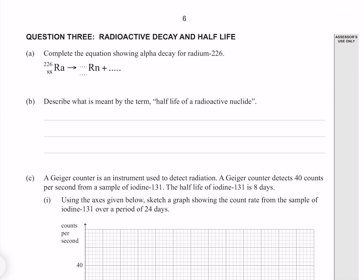Question 3. Complete the equation showing alpha decay for radium-226. Since we know our radon has undergone alpha decay, we can substitute our alpha particle in, with an atomic mass of 4, and an atomic number of 2. The atomic masses must add to 226, and the atomic numbers must add to 88, and so 226 minus 4 gives us 222, and 82 minus 2 gives us 86.